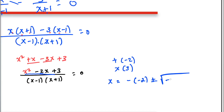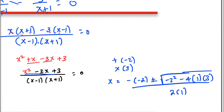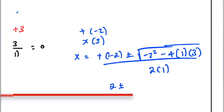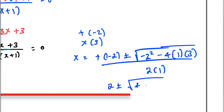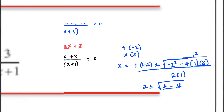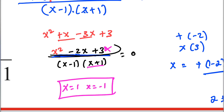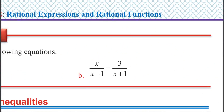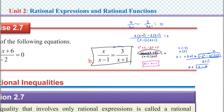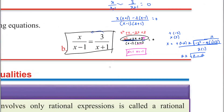Using the quadratic formula with b squared minus 4ac: one plus or minus radical of 4 minus 4 times 1 times 3 over 2 times 1. This gives no real solution. So the equation has no solution.